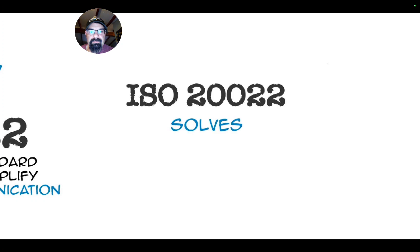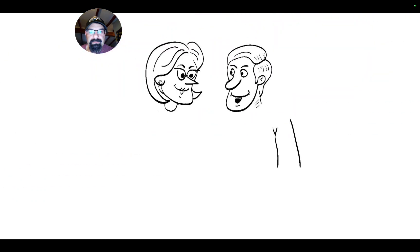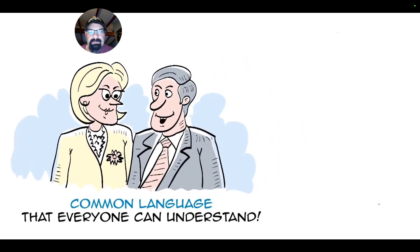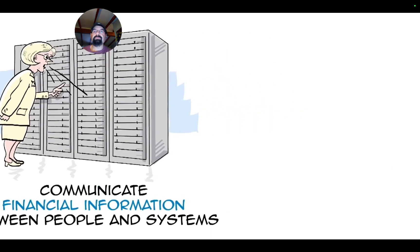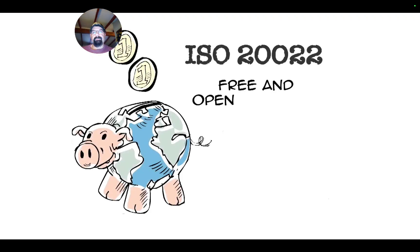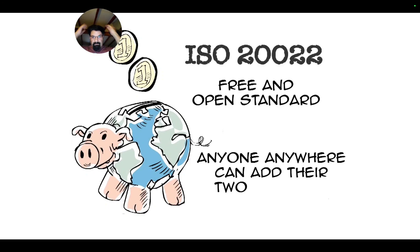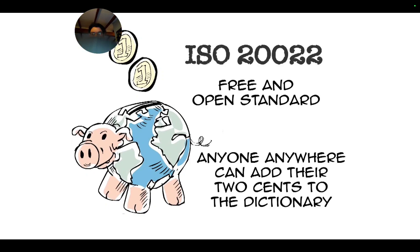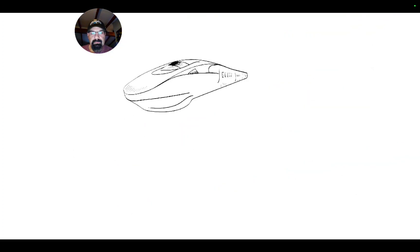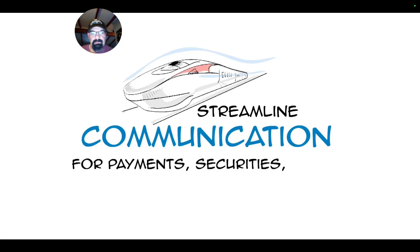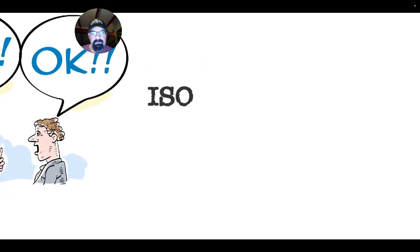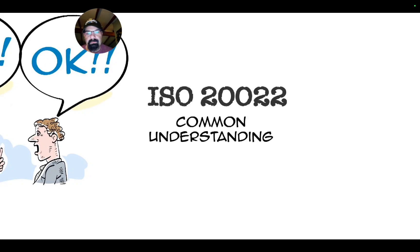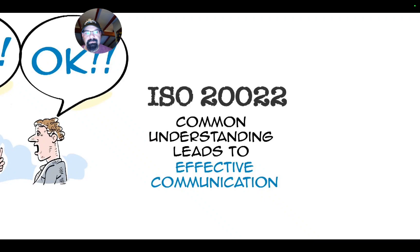ISO-20022 solves communication confusion by offering a global dictionary of common language that everyone can understand, so information can be processed and exchanged worldwide clearly and consistently, making it easier than ever to communicate financial information between people and systems. What's more, ISO-20022 is a free and open standard, which means that anyone, anywhere can add their two cents to the dictionary to help write and build solid business standards right across the globe. Not only does ISO-20022 streamline communication for payments, securities, funds, foreign exchange trading, and credit card sectors — it also reduces risk, big time. Because common understanding leads to effective communication and makes doing business a whole lot easier.